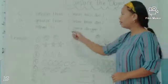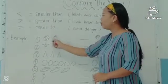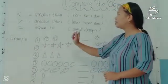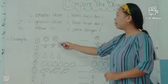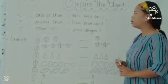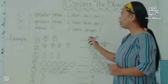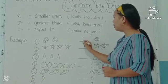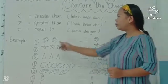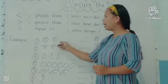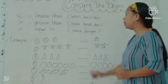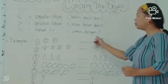In the left side, there are two flowers. So this is greater than one flower in the right side. We make the symbol here: greater than.